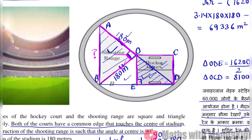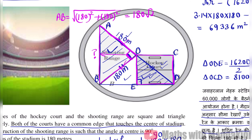Here we have the 90 degree angle at the opposite side, so AB is our hypotenuse. AB is equal to under root of 180 squared plus 180 squared, which is our perpendicular and base. When we solve it, the answer is 180√2 meters.